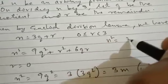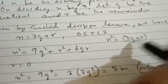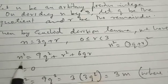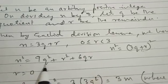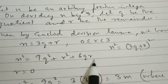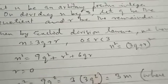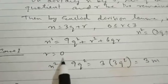We write n squared, and after squaring we get n squared equal to 9q squared plus r squared plus 6qr. Now to solve the question we consider different cases. Case number one: when r equals 0.